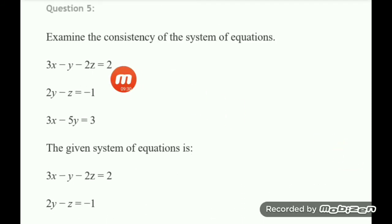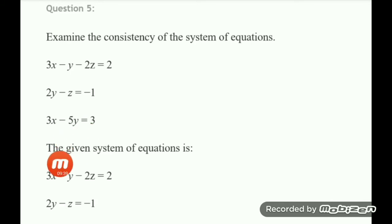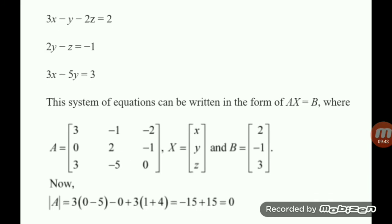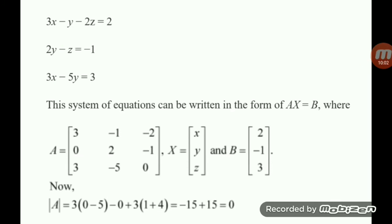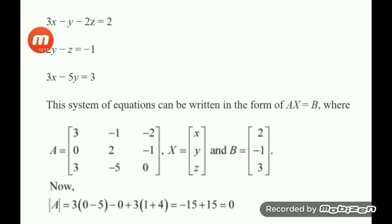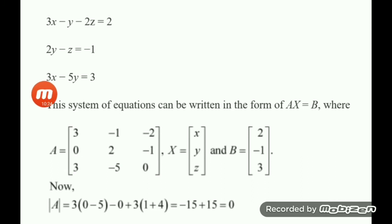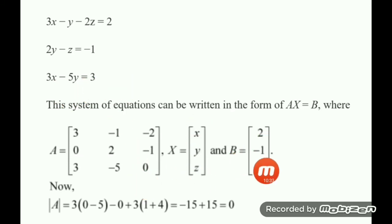The next question: examine the consistency of 3x minus y minus 2z equal to 2, 2y minus z equal to minus 1, and 3x minus 5y equal to 3. Write the system in matrix form AX equal to B. The coefficient matrix A has first row 3, minus 1, minus 2; second row 0, 2, minus 1 (since x is absent in the second equation, its coefficient is 0); third row 3, minus 5, 0 (since z is absent, its coefficient is 0).